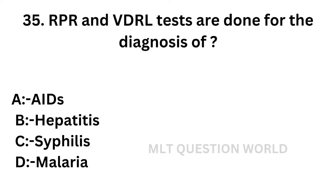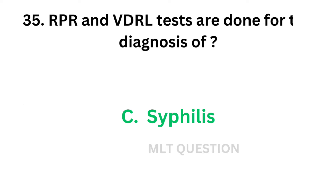Question number 35: RPR and VDRL tests are done for the diagnosis of — option A: AIDS, option B: Hepatitis, option C: Syphilis, option D: Malaria. Which of the following conditions can be diagnosed by RPR and VDRL? The correct answer is option C, syphilis.